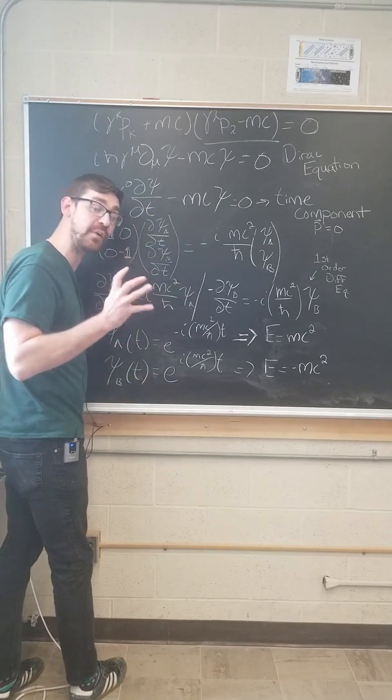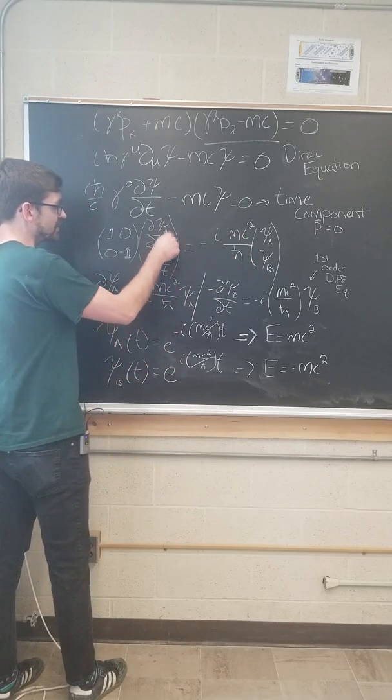This psi is a Dirac 4 spinor that has four components. We're going to split it up into two: psi a and psi b.